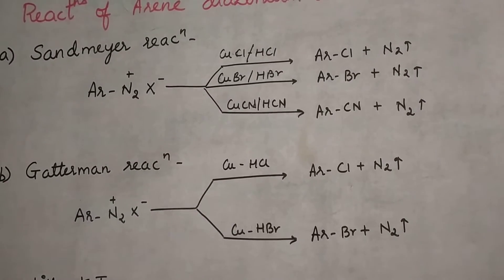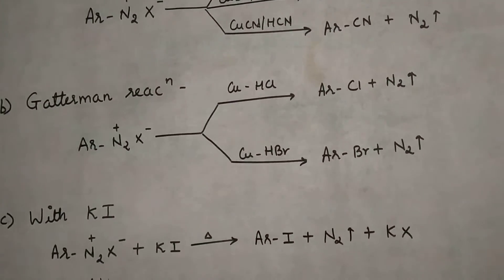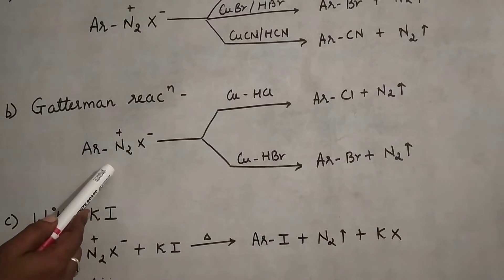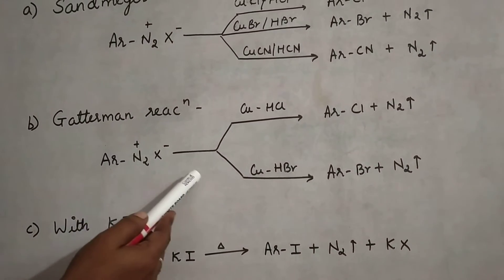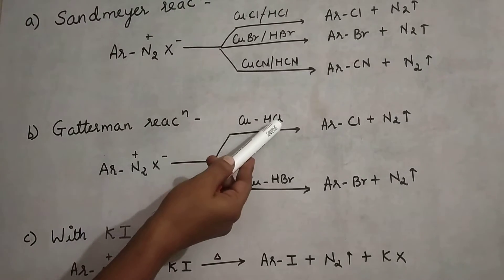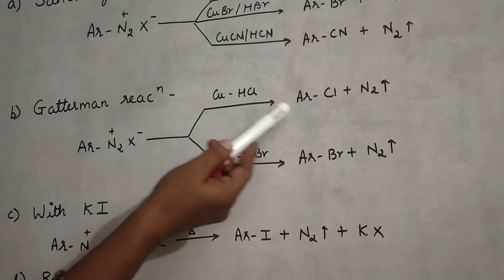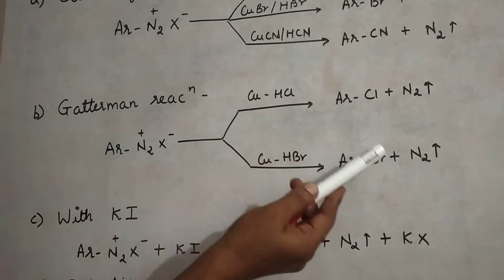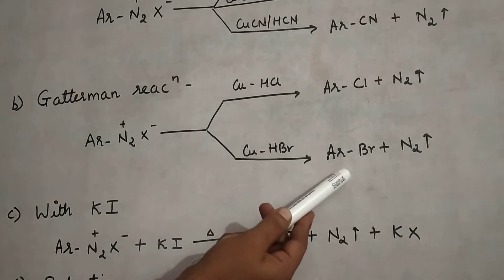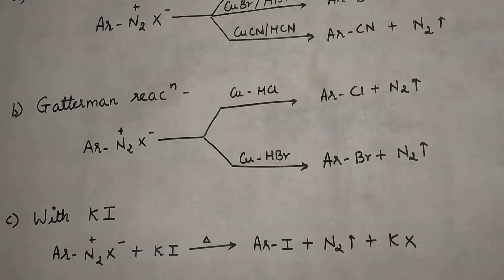Next is the Gattermann reaction. The starting substance is the same — arene diazonium salt — but the change is in the reagent. Here, copper powder with HCl or copper powder with HBr is used. When HCl is used, there is formation of ArCl along with nitrogen. When copper powder with HBr is used, there is formation of ArBr and nitrogen is evolved.